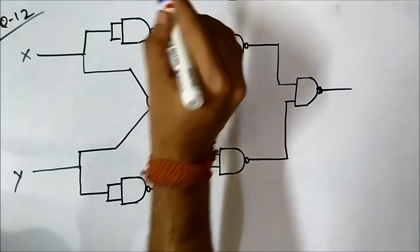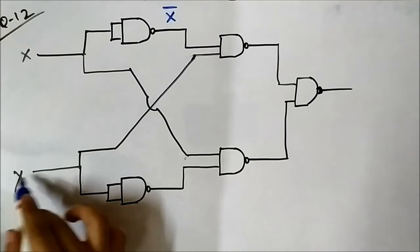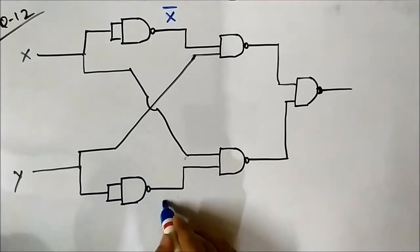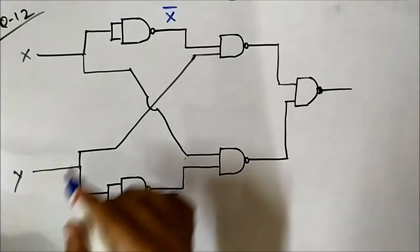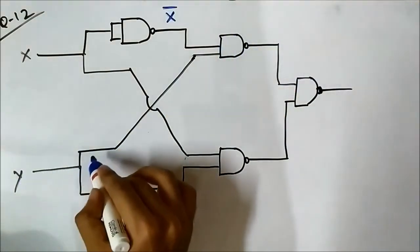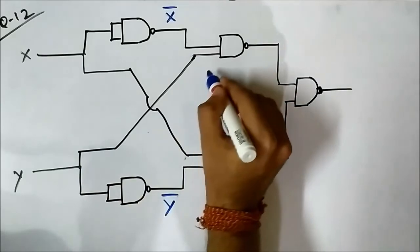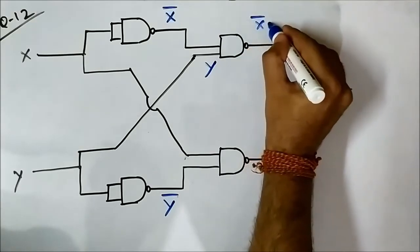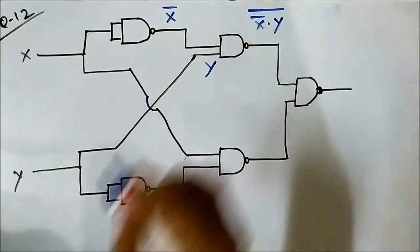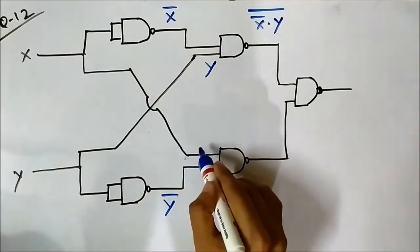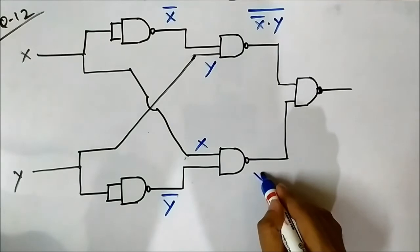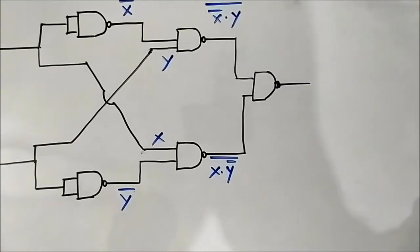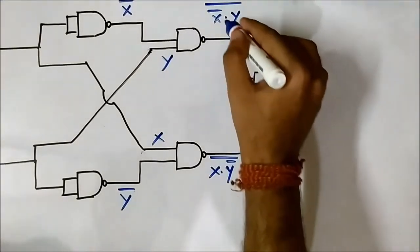The second first-layer NAND gate has both inputs Y shorted, so it also behaves as an inverter giving Y complement. In the second layer, one NAND gate has inputs Y and X complement, so the output is (X complement · Y) whole complement. The other second-layer NAND gate has inputs Y complement and X, giving output (X · Y complement) whole complement.